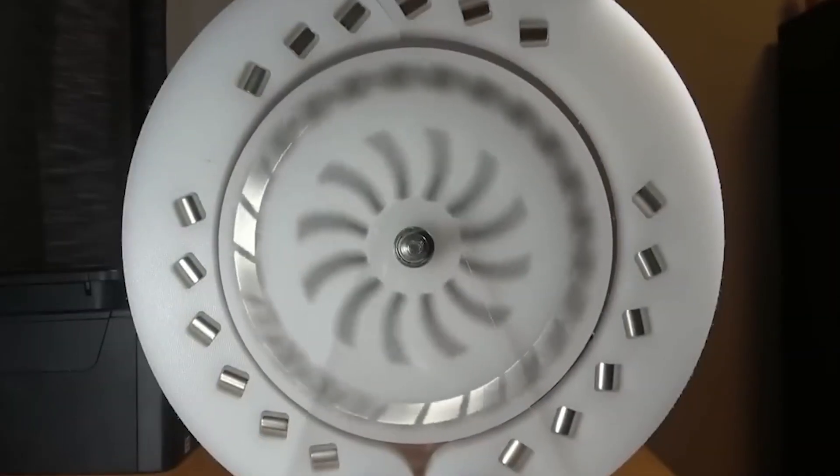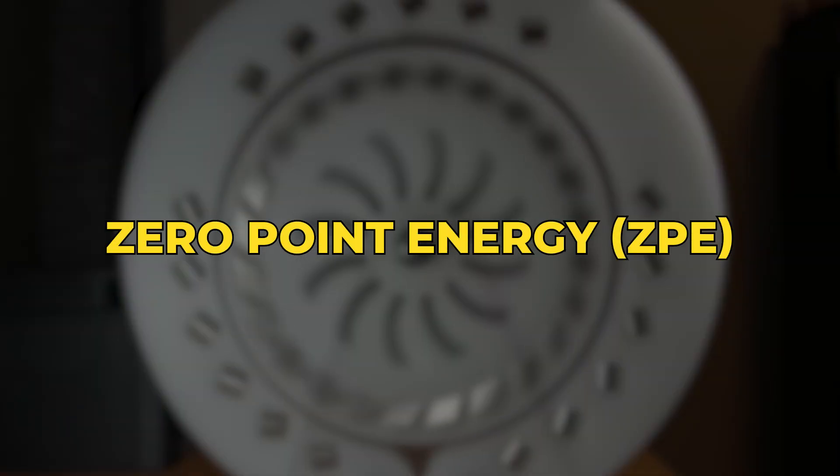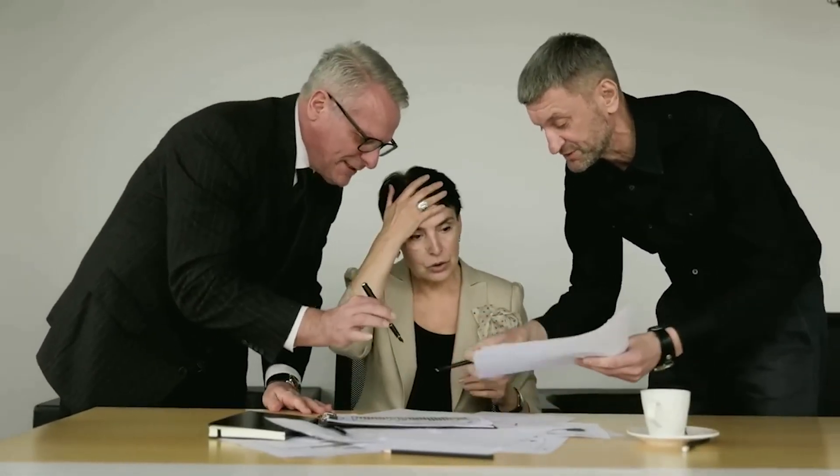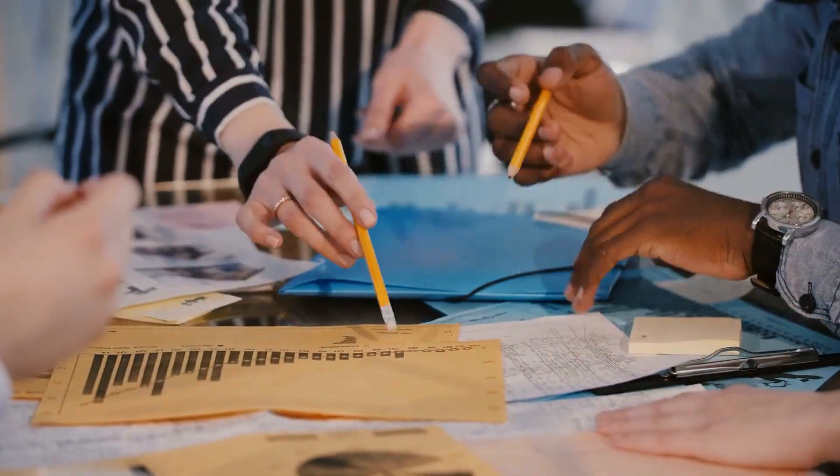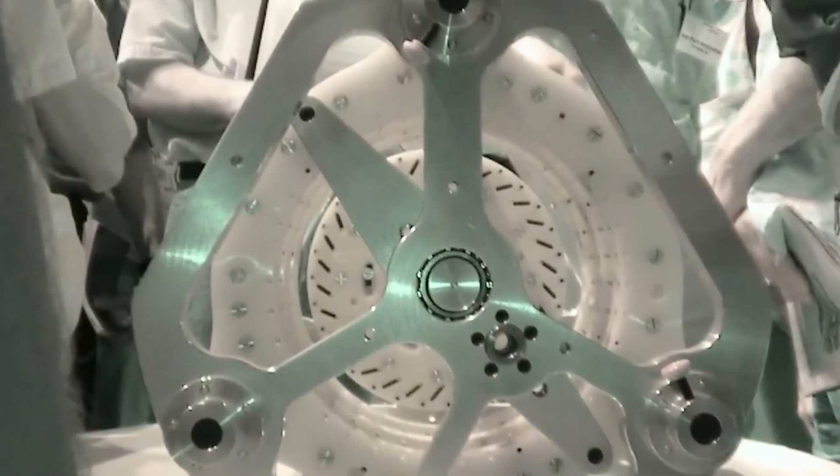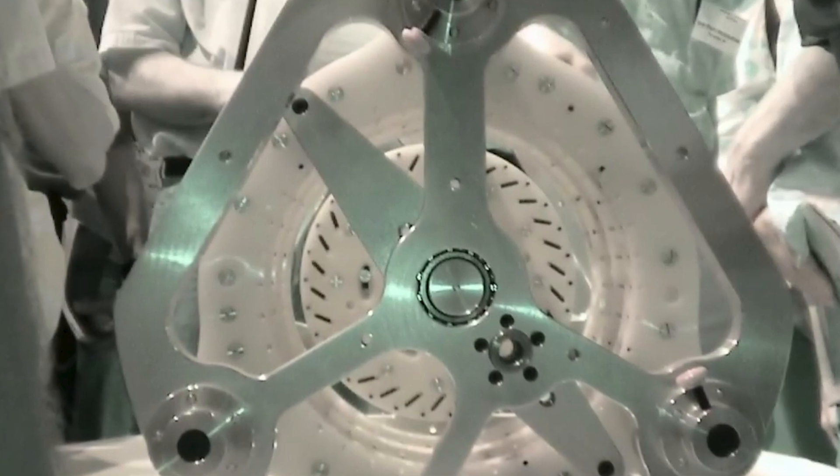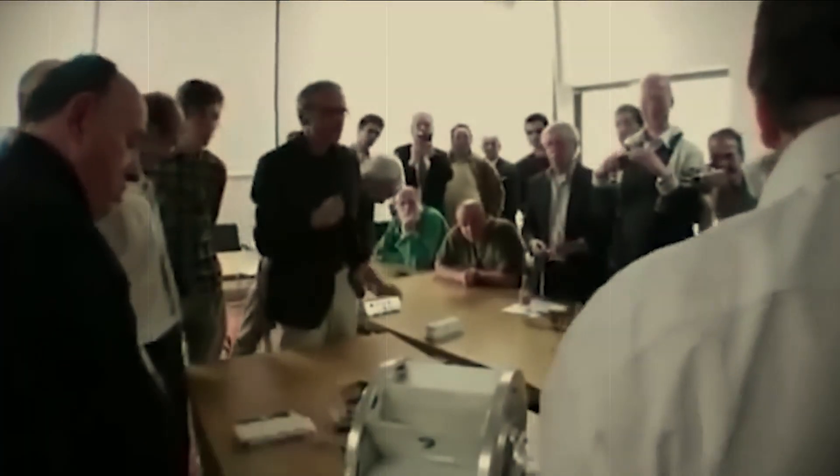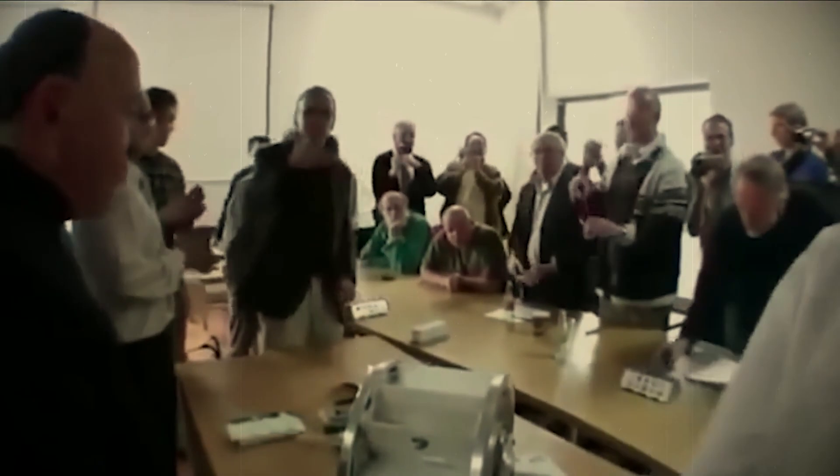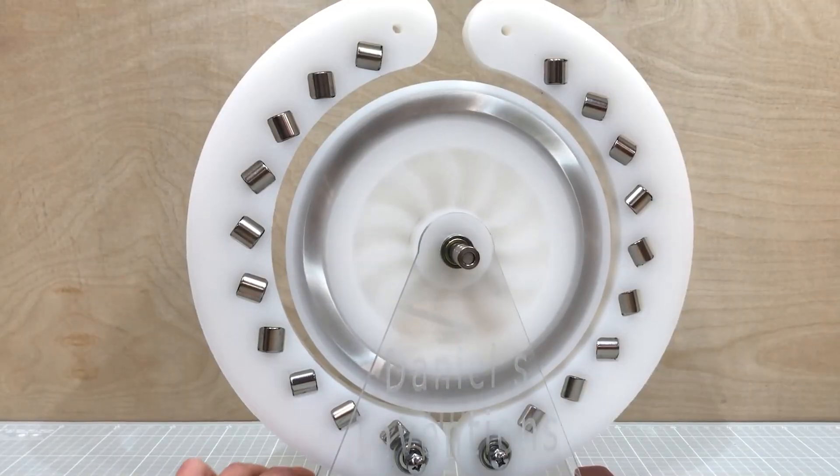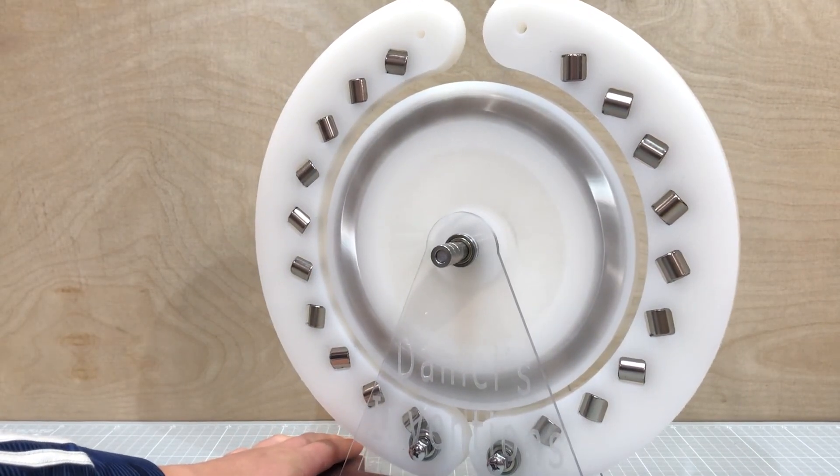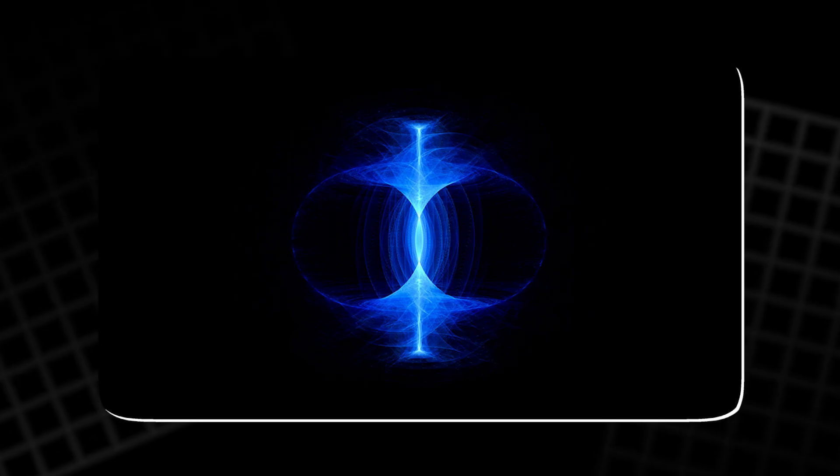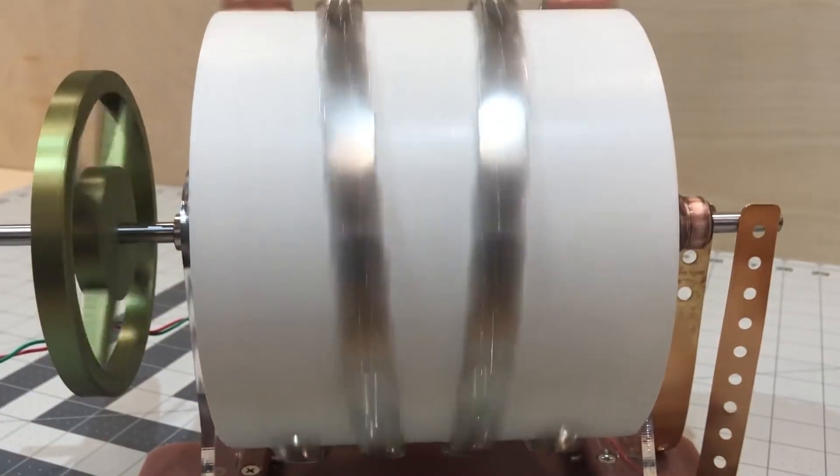At the heart of magnet motor claims is the concept of zero-point energy ZPE. According to enthusiasts, magnets are capable of tapping into this invisible energy field that exists throughout the universe. ZPE is said to be the lowest possible energy state of a system, existing even at absolute zero temperatures. Some believe this energy is responsible for phenomena such as dark energy, the mysterious force driving the expansion of the universe. Magnet motors, proponents argue, act as antennas that can pick up these ZPE waves and convert them into usable electricity.